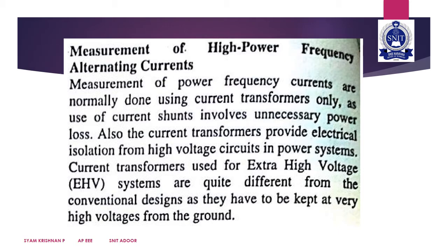The measurement of high-power frequency alternating currents is normally done using CTs — that means current transformers. For example, on the distribution side, transformers in substations step down high voltage to low voltage, but the current is stepped up. Current transformers are used to measure these high currents on the distribution side.